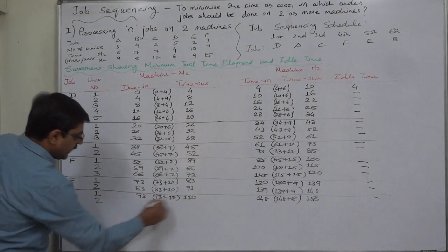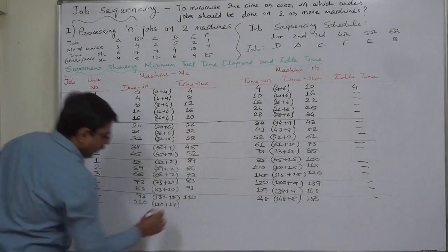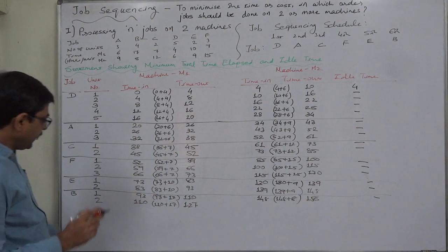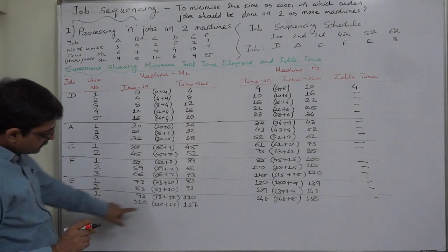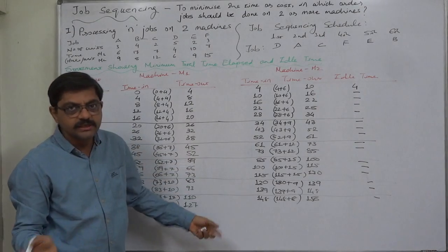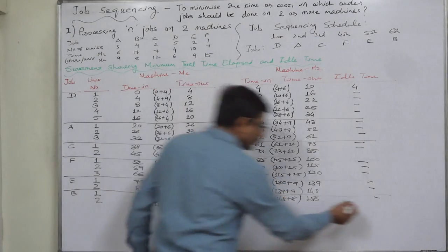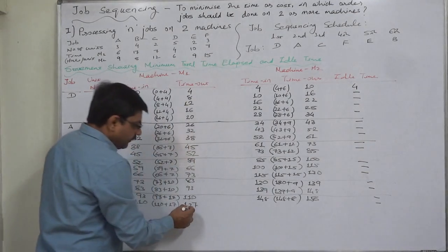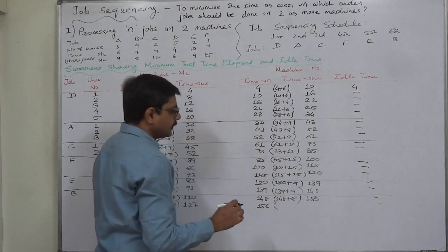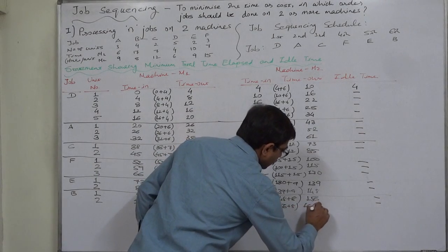Second unit of B: time in on machine 1 is 110, 110 plus 17 equals 127. Machine 2 is busy and not waiting, so no idle time. 127 or 156, whichever is later: 156 becomes time in, 156 plus 8 equals 164.